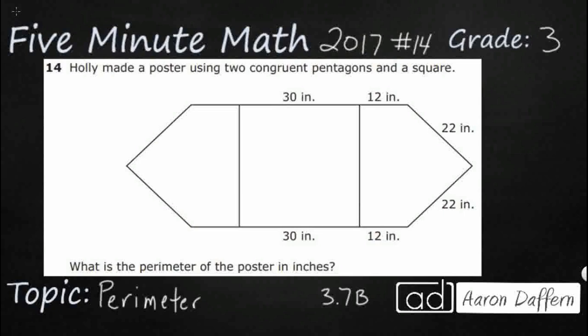So we have a strange looking poster here. Holly is making a poster and we have two congruent pentagons and a square. And this is going to be our keyword right here, kind of hidden inside that first statement is the key to unlocking this particular problem. So we need to find the perimeter of the poster in inches.